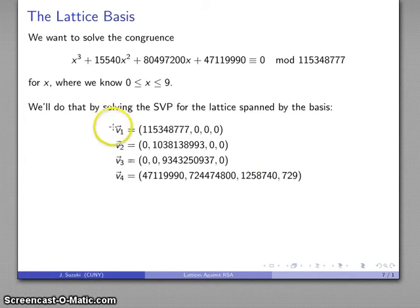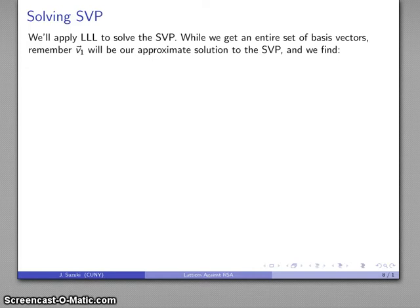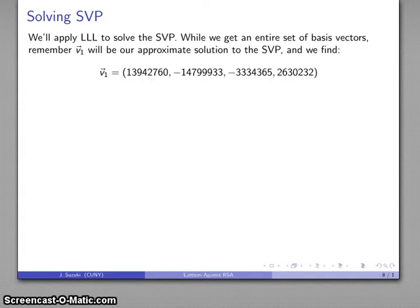So I have my lattice basis. I apply LLL to get my new lattice basis of quasi-orthogonal vectors. The only one I actually need is that first basis vector, because that first basis vector is going to give us an approximate solution to the shortest vector problem. And if I find that, my first lattice basis vector v1 looks like (13942760, -14799933, -3334365, 2630232).